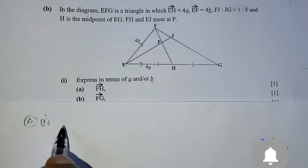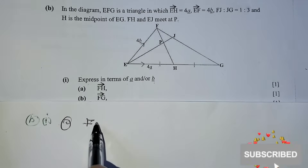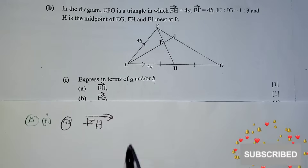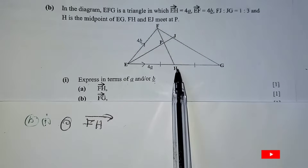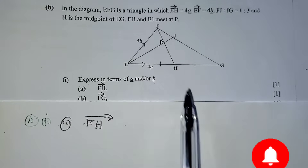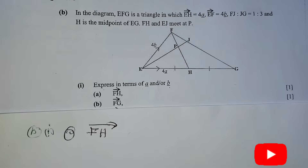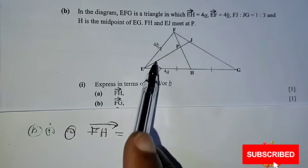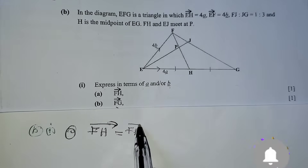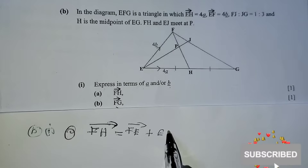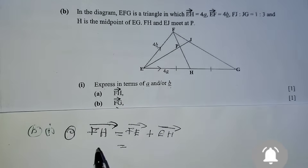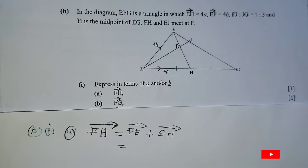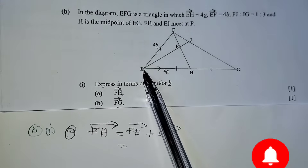We are calculating vector FH. F is here — we are asked to find FH. So I'm going to move via FE plus EH. Vector FE plus EH. Now, FE is the opposite of EF vector, so it is negative. This vector is moving towards F.